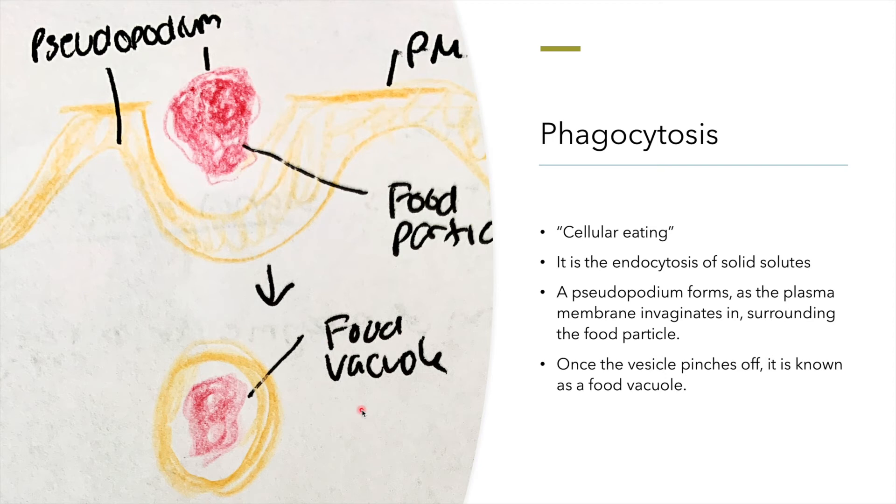The food vacuole then fuses with the lysosome, where it is broken down by hydrolytic enzymes.